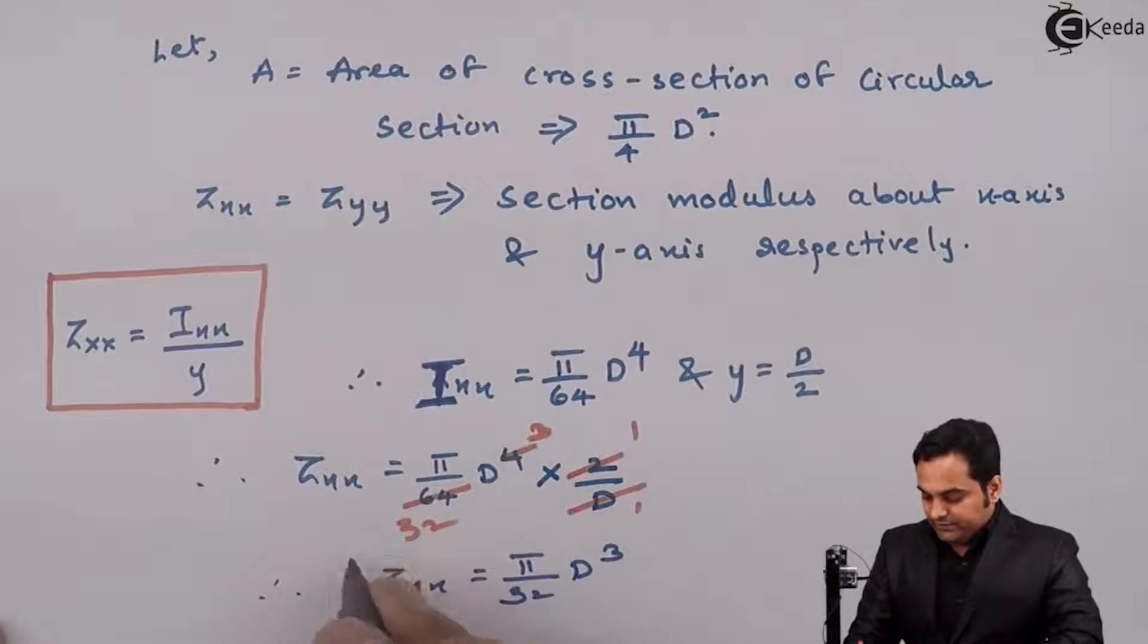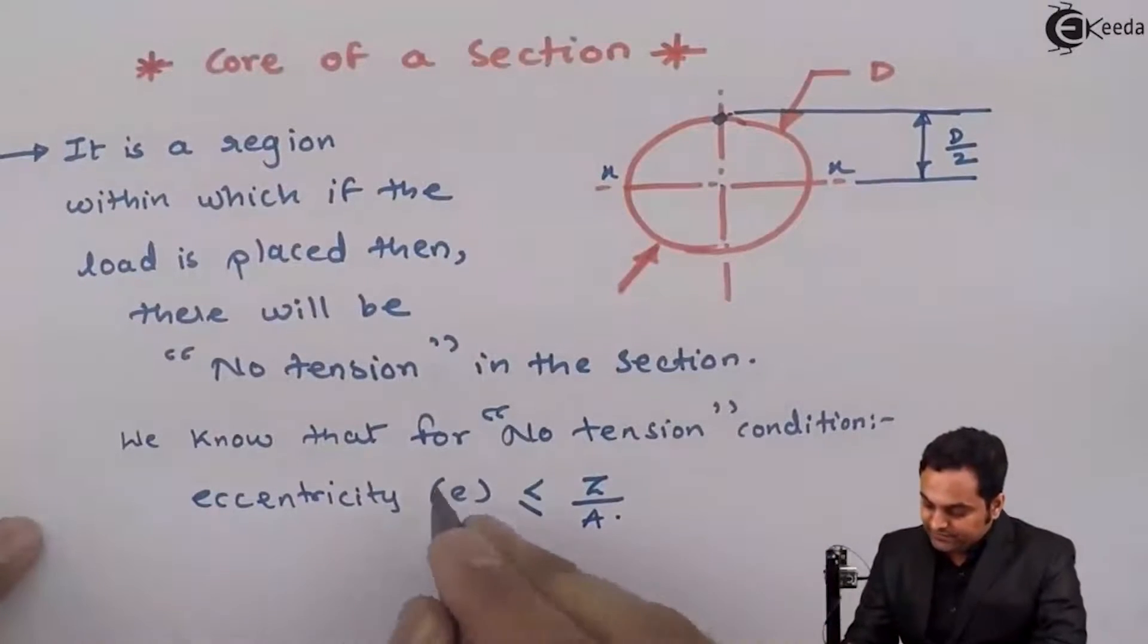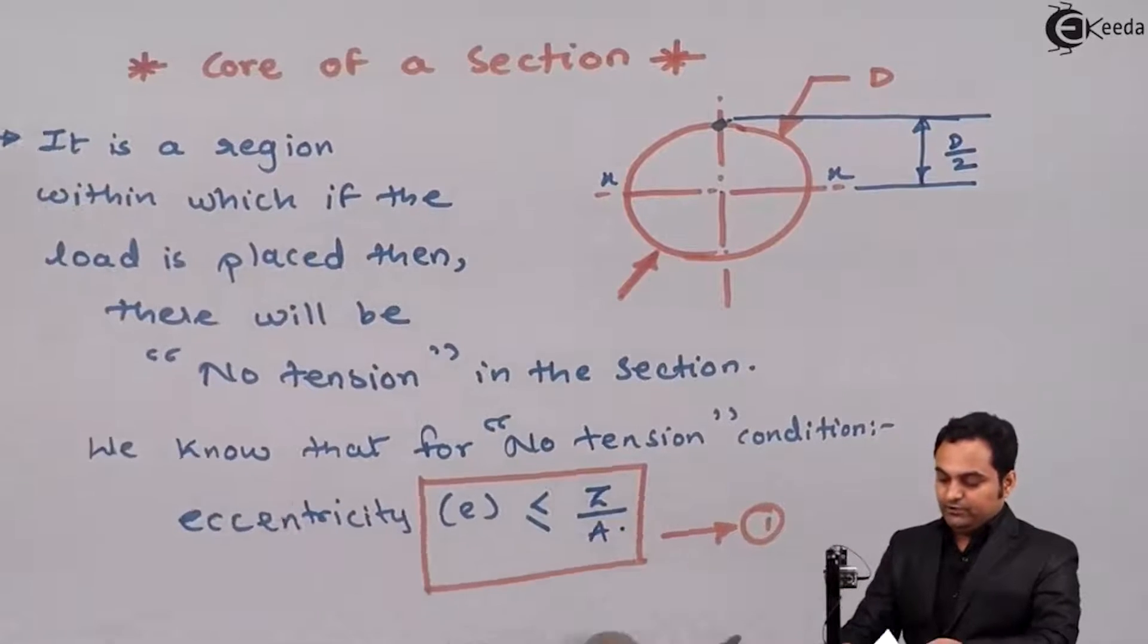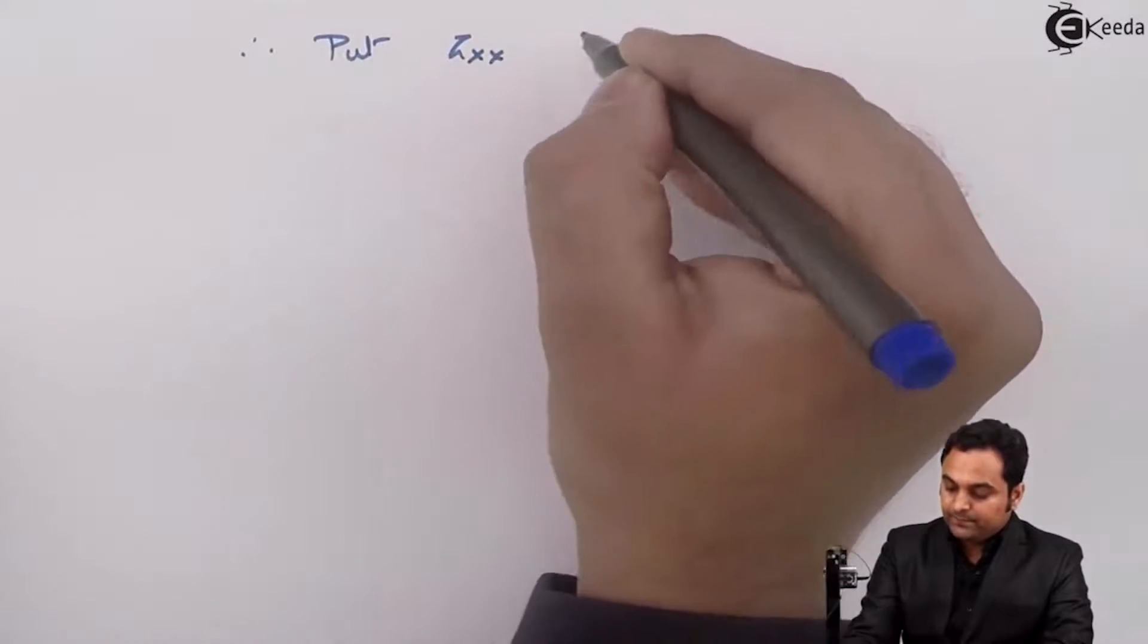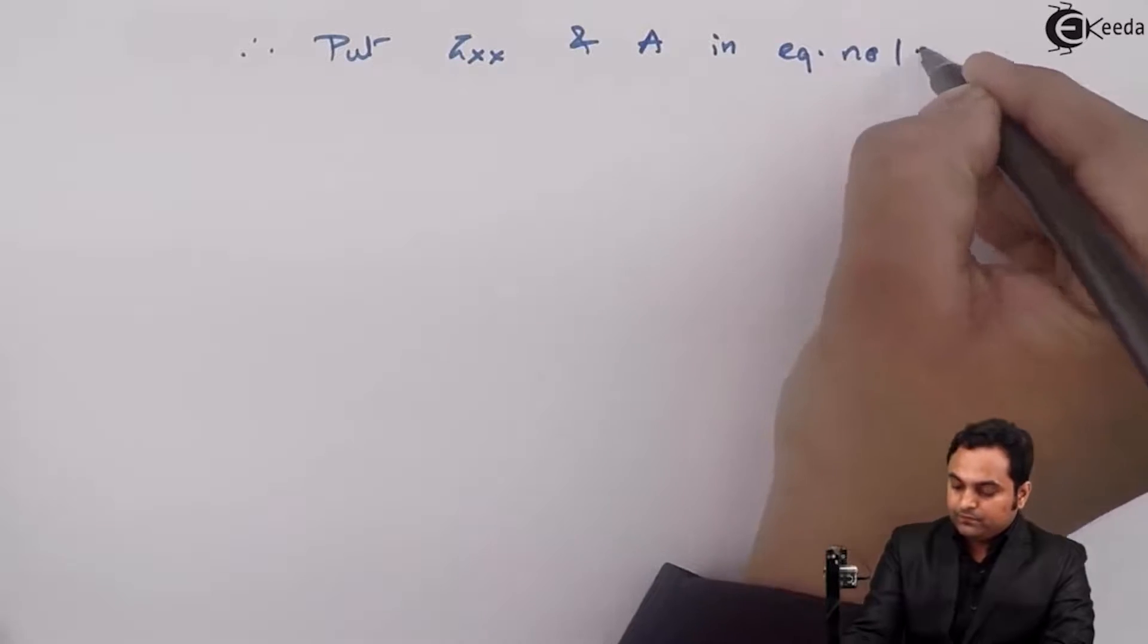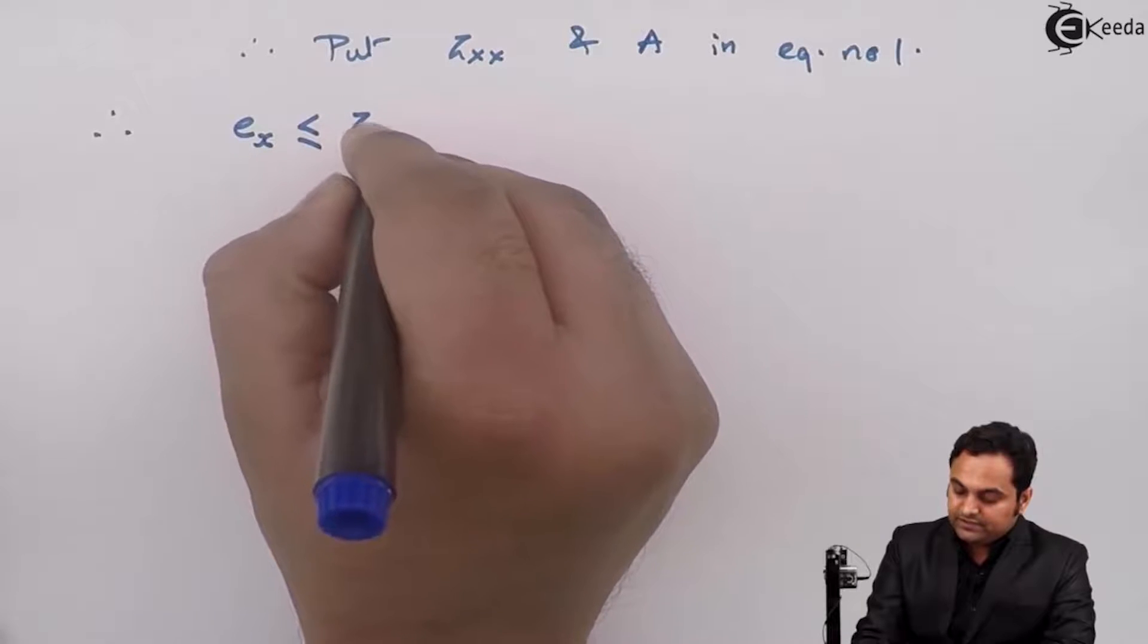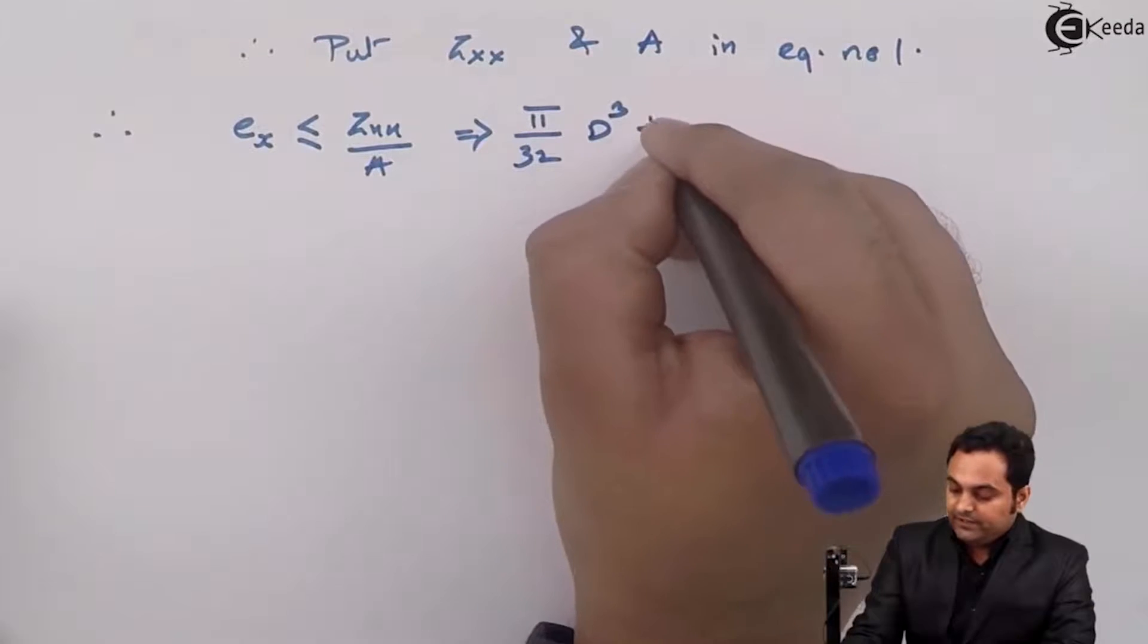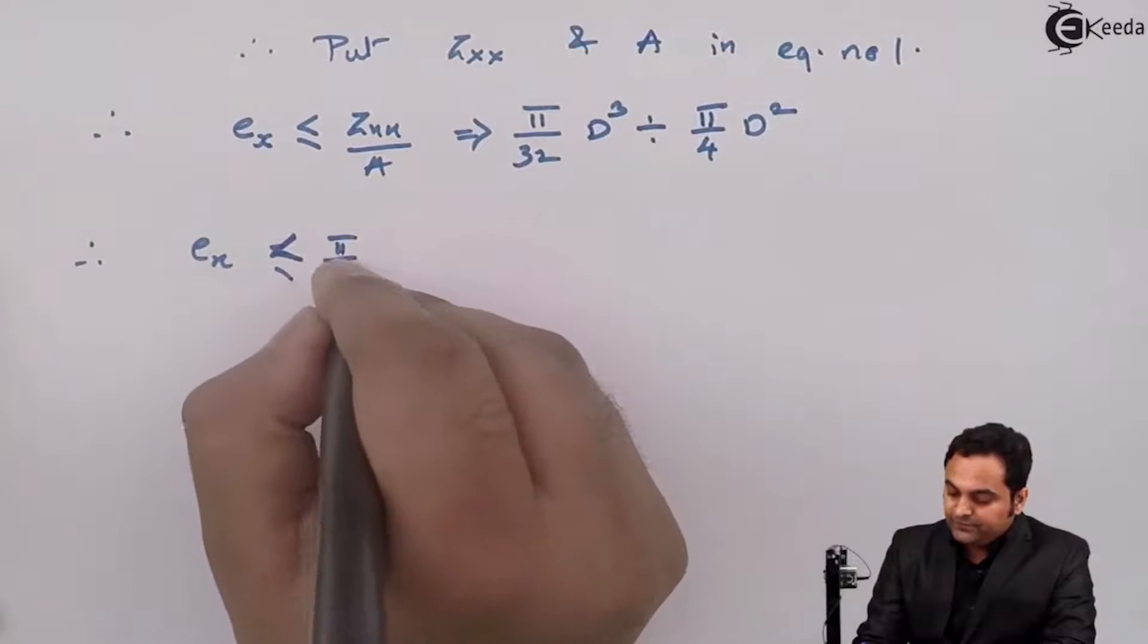After getting ZXX value, I'll put ZXX and area in equation 1. Put ZXX and area in equation 1. We have eccentricity EX ≤ ZXX/A, which is (π/32 D³) divided by (π/4 D²).